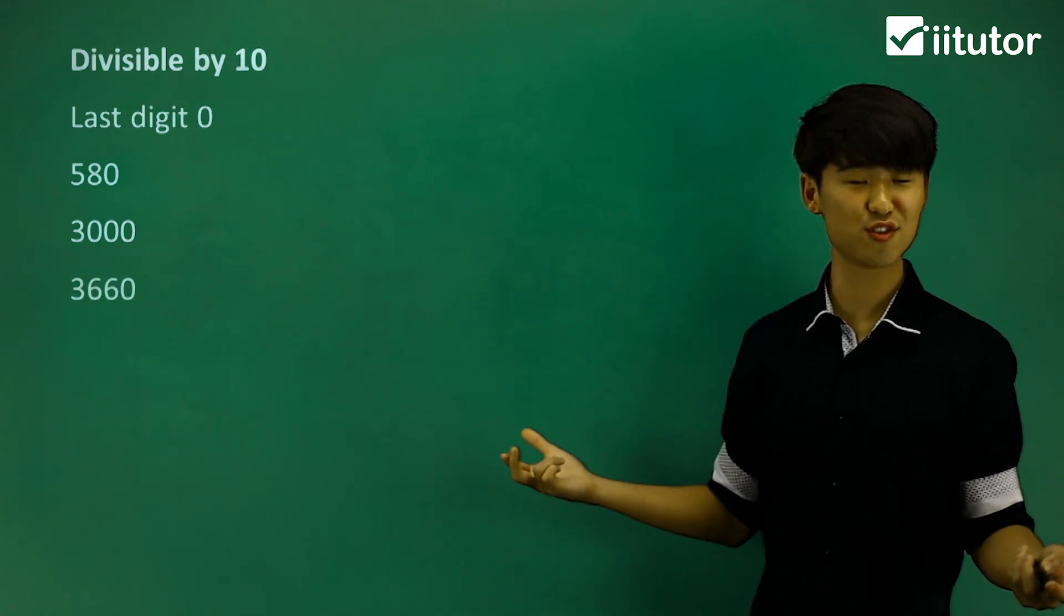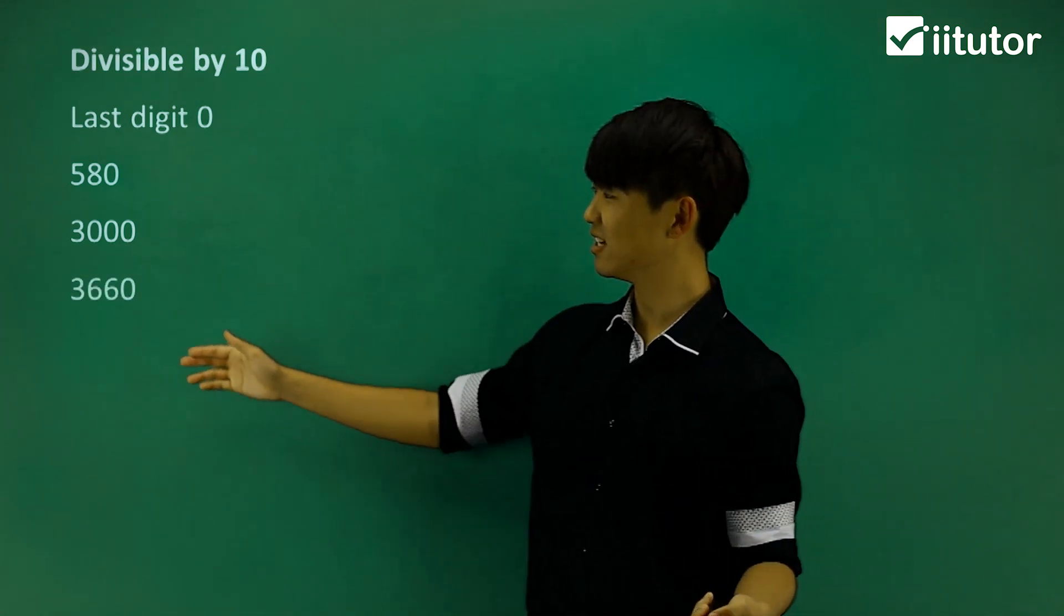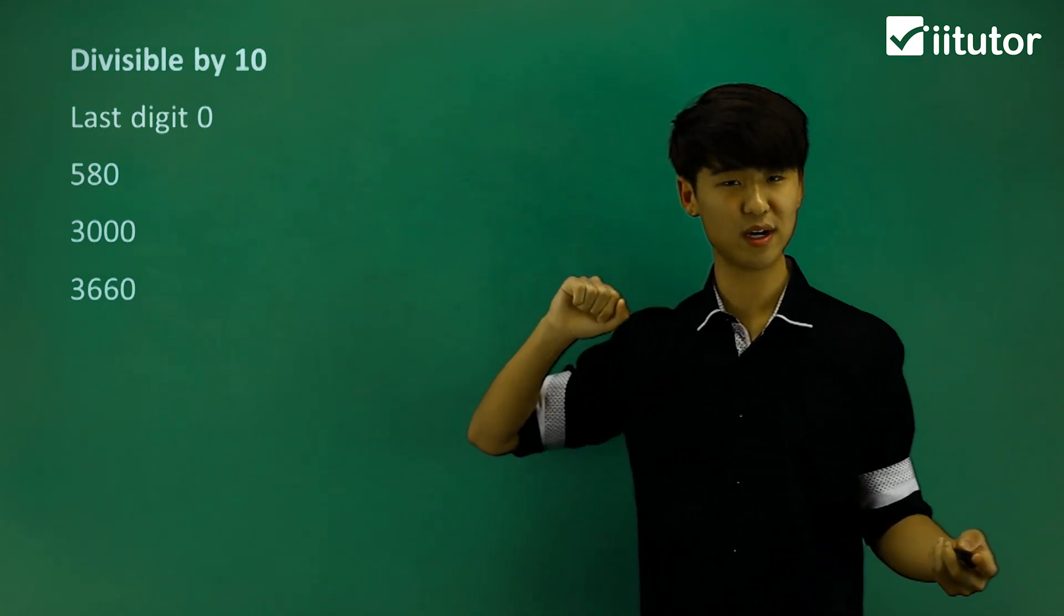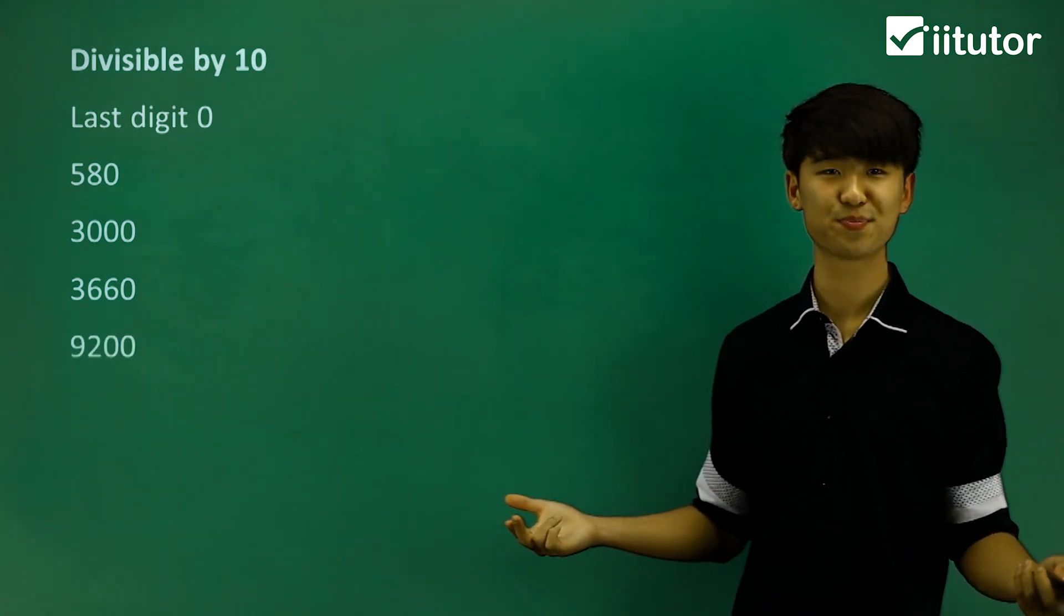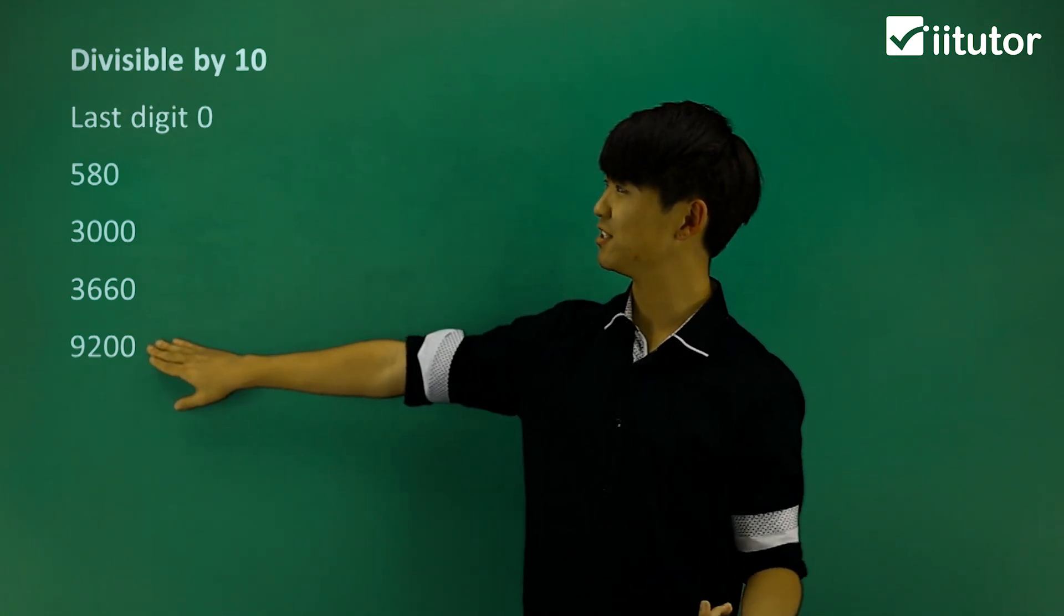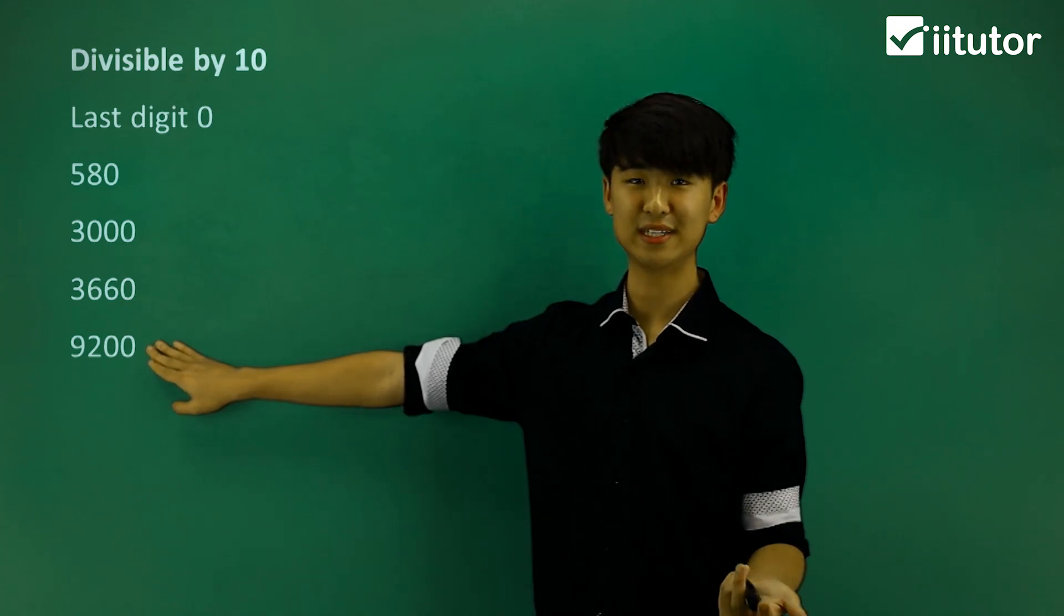Same with this one, 3660 has a 0 at the end, so last digit is 0, then that means this whole number is divisible by 10. 9200, this one again as well, last digit is 0, so it's divisible by 10.